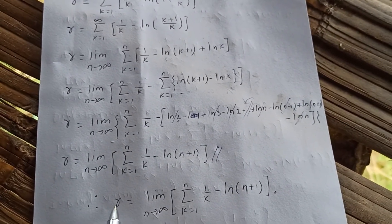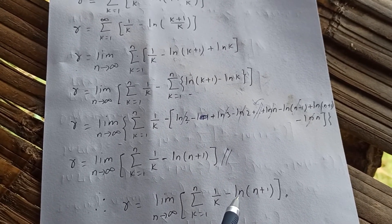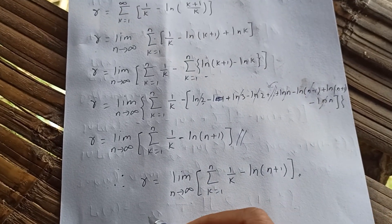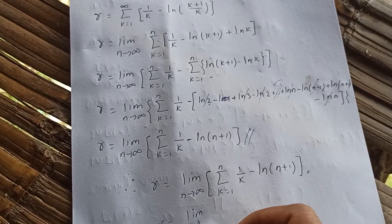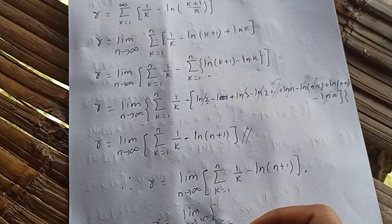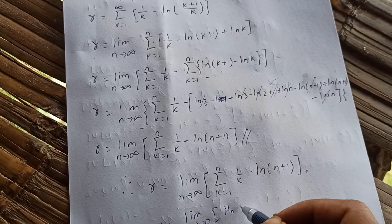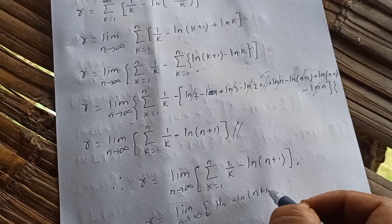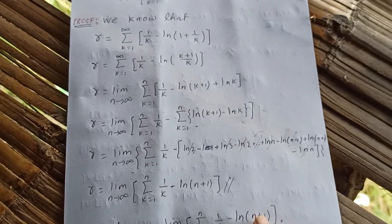Therefore, the Euler-Mascheroni constant equals the limit as n approaches infinity of the sum from k equals one to n of one over k minus natural log of n plus one. Sometimes we write this as the limit as n approaches infinity of the harmonic number H sub n minus natural log of n plus one. This is nothing but the harmonic number, and that will be it.